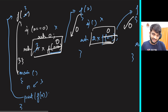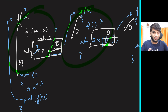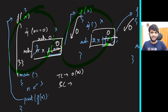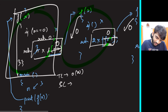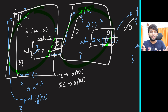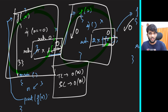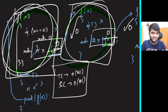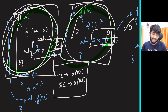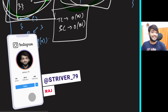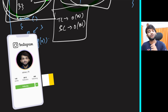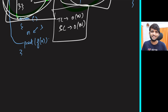For time complexity, we make one call, two calls, three calls... up to n calls, so it's O(n). For space complexity, each call awaits the next, so n functions are on the call stack simultaneously — auxiliary stack space is also O(n). I hope you've understood the entire lecture. If you did, please like this video and consider subscribing. See you in the next recursion video — bye!